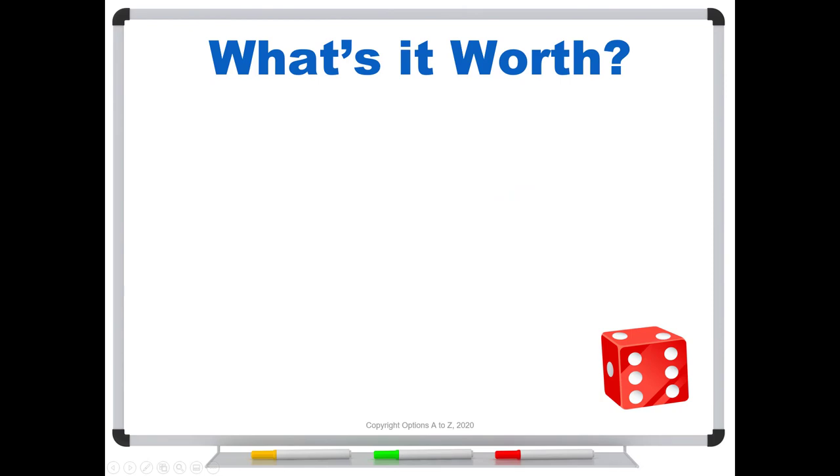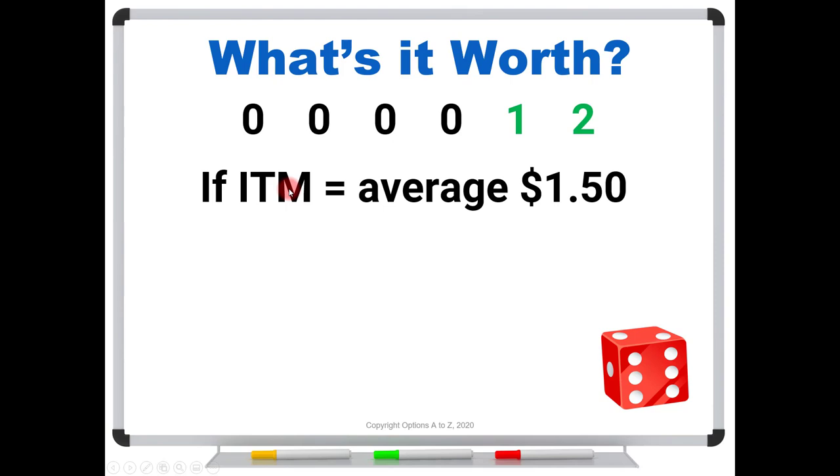So in this case, what's it worth? So in our example, the possible payoffs again are these. Now there's a lot of different ways we could approach how to calculate the fair value, but this is probably the simplest. This is the way that Black and Scholes approached it. And what they did is they said, let's assume that we have a winning position, that this is an in-the-money option. What's the average payoff? Well, the only time that we're in the money is if it's a five or a six. In other words, our payoffs are either one or two. And they're both equally likely if we're in the money. So the average payoff is right here in the middle, would be one dollar fifty.